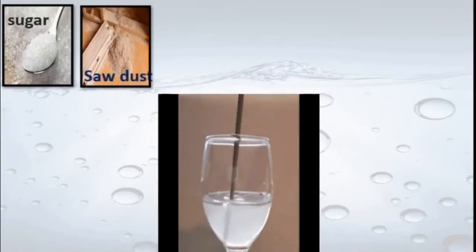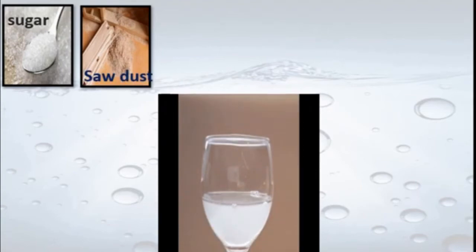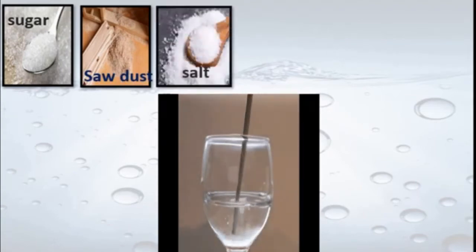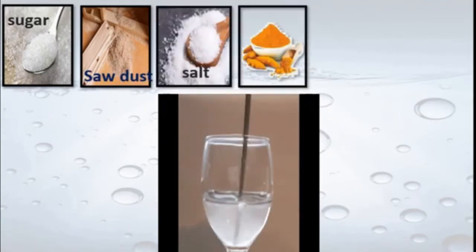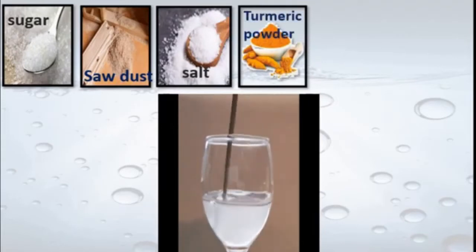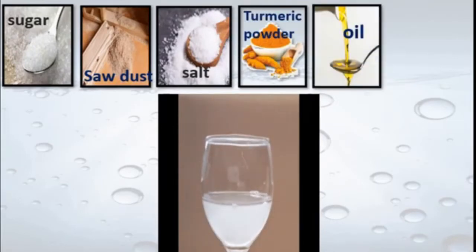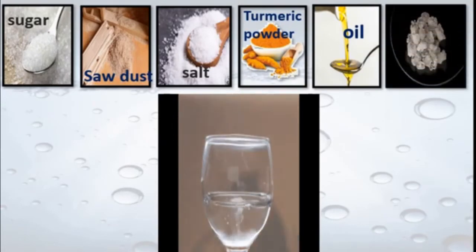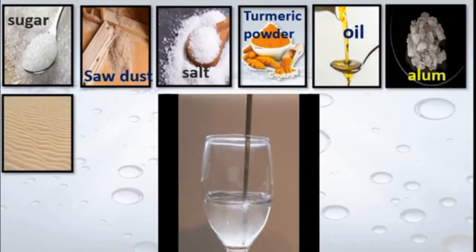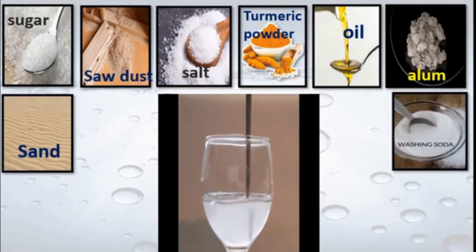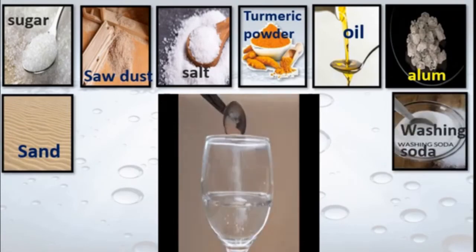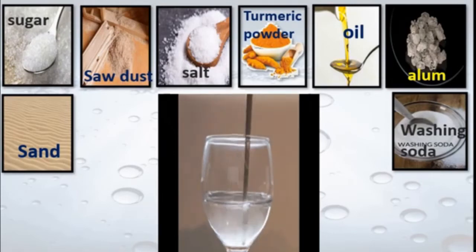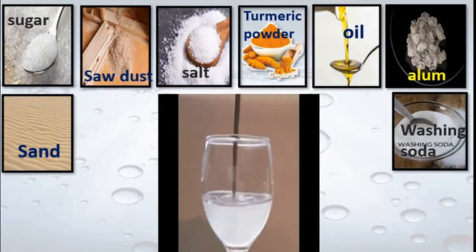Like that, we will take different substances. Now I will take sawdust — that is wooden powder — then a spoonful of salt, then turmeric powder (haldi), then oil, alum, sand, and washing soda. I have taken so many substances and I will put them one by one in the water separately.